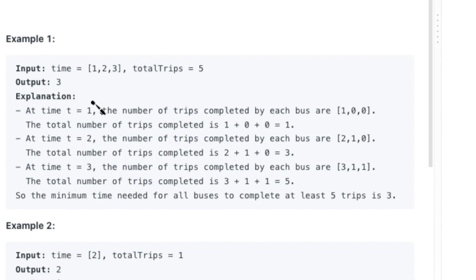So let's try the example. You can see at time equals one hour, only one trip can be completed due to bus one completing its trip. At two hours, three trips are completed due to bus one making two trips and bus two making one.